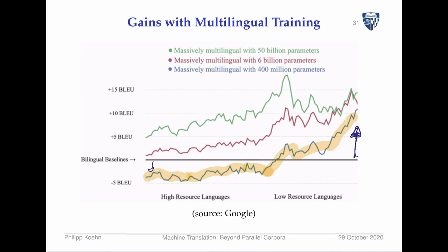To remedy the degradation for high-resource pairs, the solution is to add more parameters — either language-specific parameters or simply bigger models. Moving from 400 million parameters (the default model) to 6 billion parameters means you never lose translation quality and still see strong gains for low-resource languages. And once you realize more parameters gives better models, why not go to 50 billion parameters? Of course, 50 billion parameters training on 100 language pairs simultaneously becomes computationally very expensive.